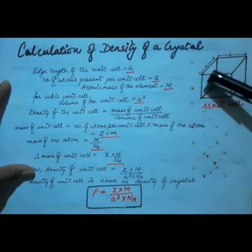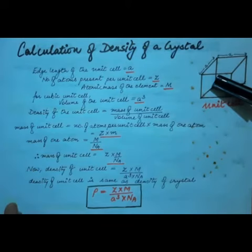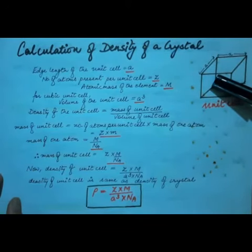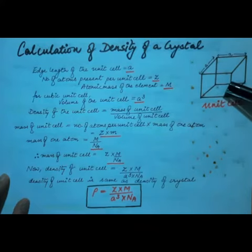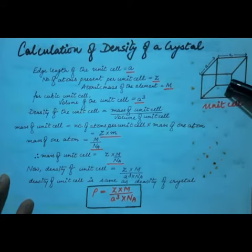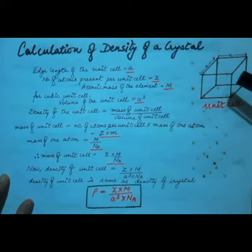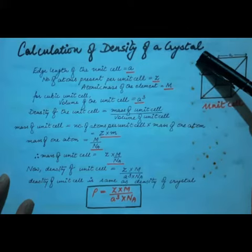Greater the number of particles present, greater is the density of the unit cell. It actually depends upon the number of particles, or we can say atoms, present. This unit cell is actually the three-dimensional arrangement of atoms or constituent particles, which when repeated over and over again forms the entire crystal structure.